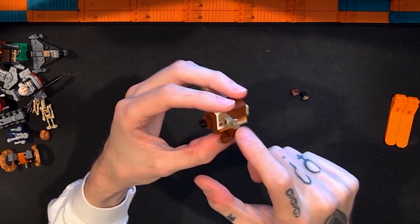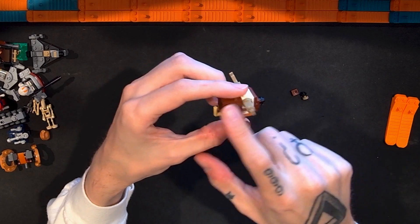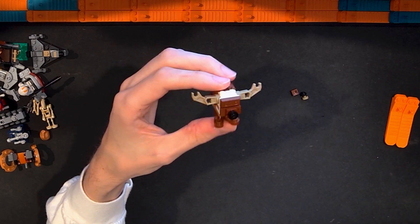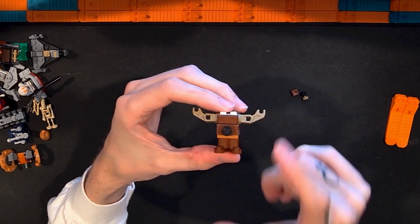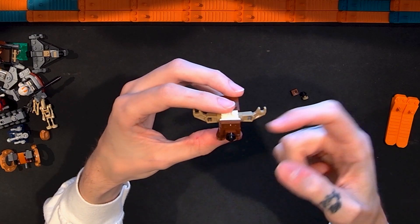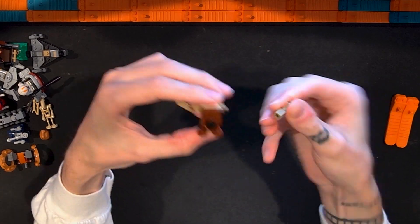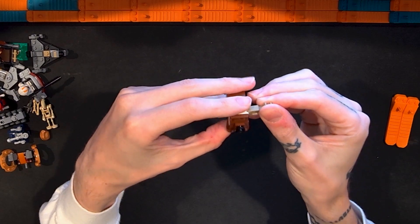They're traditionally very boxy. They have little feet here. So the overall shape for this makes sense. The horns here using these kind of clip pieces that also can receive a bar element are the antlers. Those bits would not traditionally be on a gonk droid so it does change it a little bit.